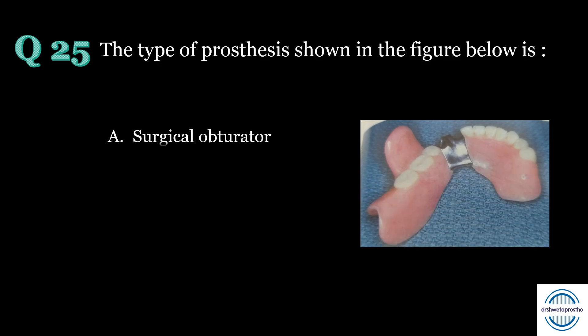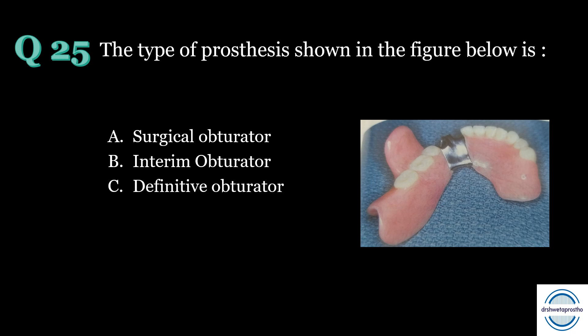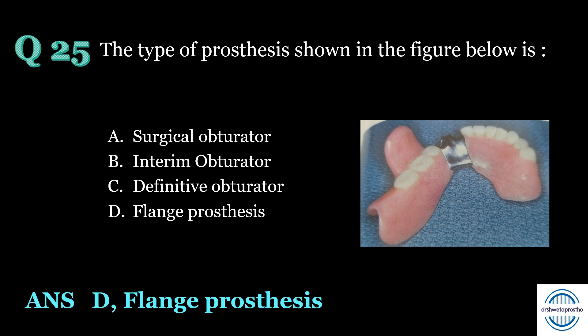Question number twenty-five: the type of prosthesis shown in the figure below is — A. Surgical obturator, B. Interim obturator, C. Definitive obturator, D. Flange prosthesis. The answer is D, flange prosthesis, also called the mandibular guiding flange prosthesis. It is given to patients with hemimandibulectomy and guides the mandible into occlusion.